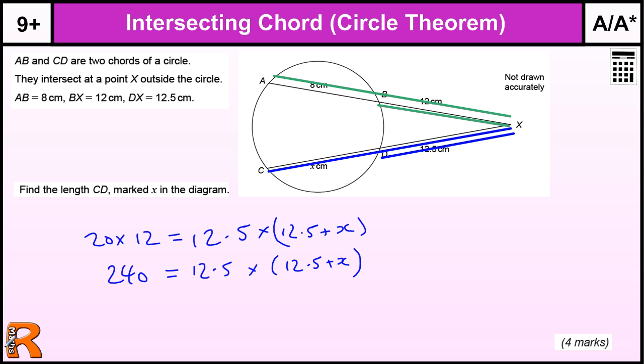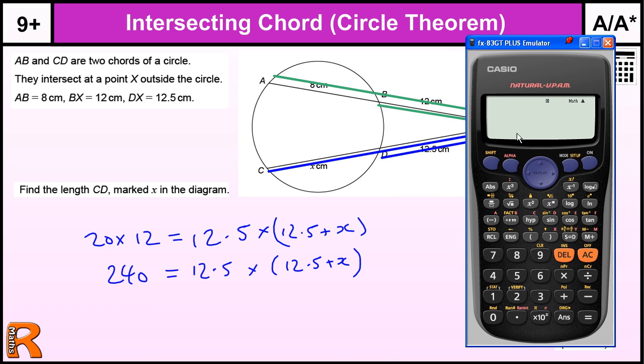If we divide by 12.5, let's get the calculator in. 240 divided by 12.5 is going to be 19.2, equals 12.5 plus X. Then we take away 12.5, so 19.2 take away 12.5 gives us the answer which is 6.7.